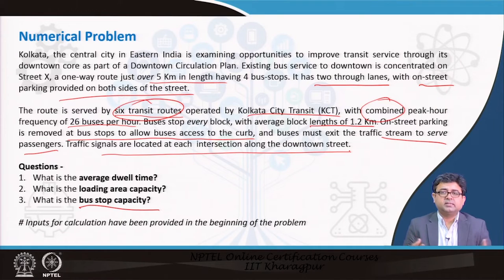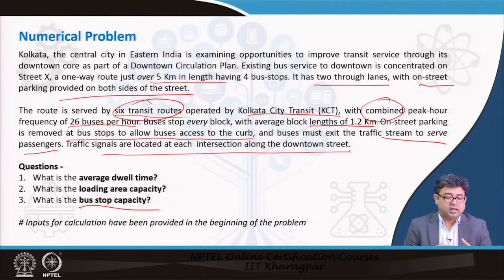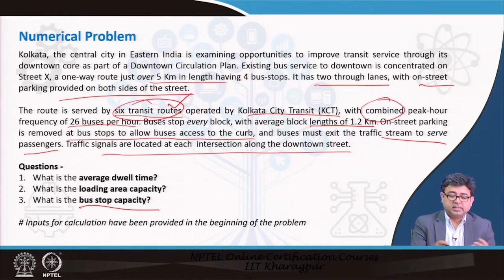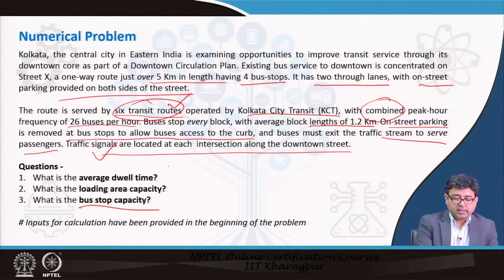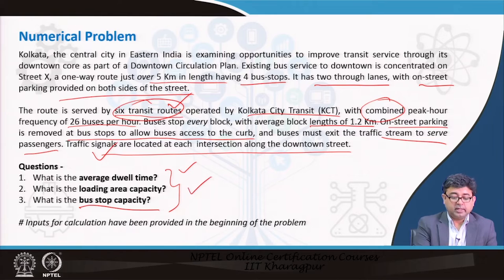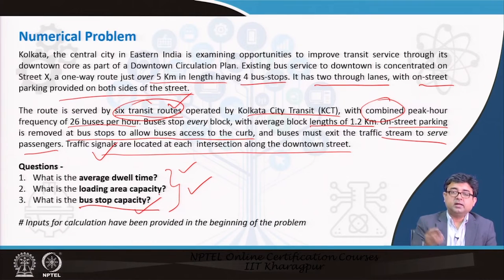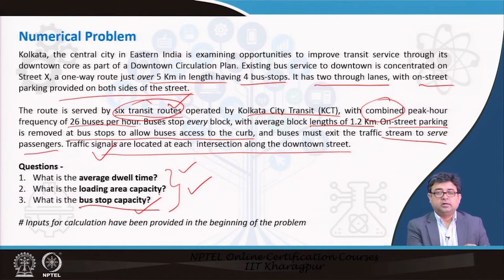This is a common situation in any city or town where you may have a bus route or network — certain overlapping bus routes, designated bus stops, and on-street parking may or may not be present. In this case everything is given to you, and what you are asked to calculate is: first, the average dwell time; second, the loading area capacity; and finally, using these to calculate the bus stop capacity. We have already learned about all these theoretical concepts in the previous lectures.